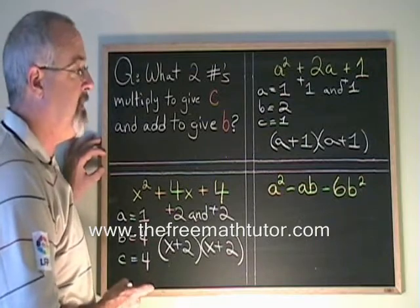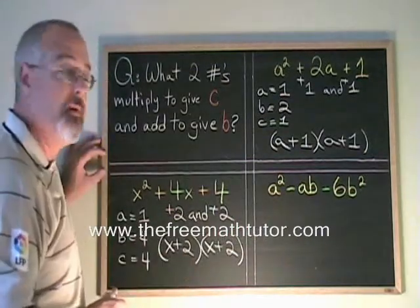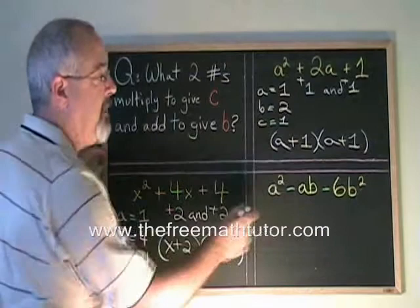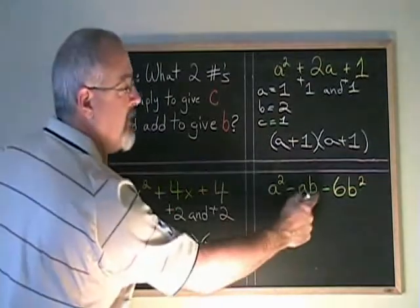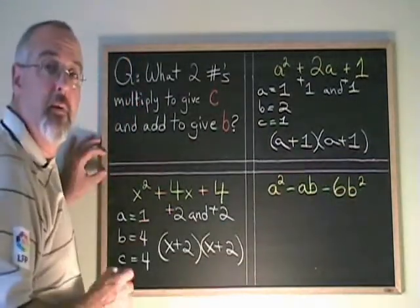The method still works when we have more complicated-looking trinomials like this one. Here we have minus signs and we have an extra letter b involved. But we use the same method.